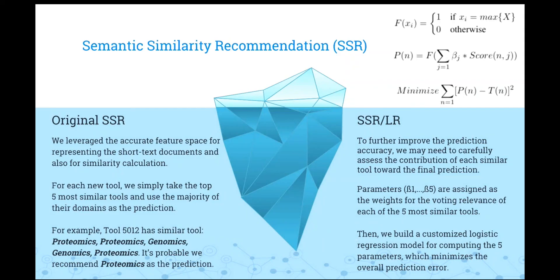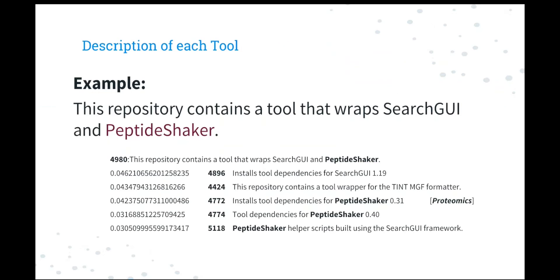For example, this example is shown at the beginning of my presentation. We don't know what the PeptideShaker means. And this tool just has less than five words. And then we got five similar tools for this tool. And we can see that the third one, 4772, has a domain with proteomics. So we can use this information to recommend the domain for our new data, the 4988. So this is a very fast way and accurate way to predict the domain.